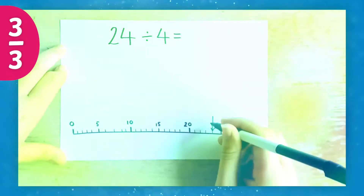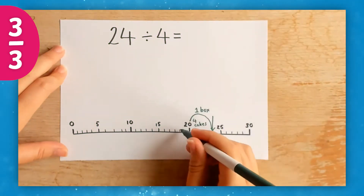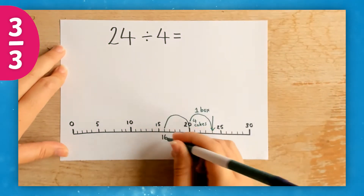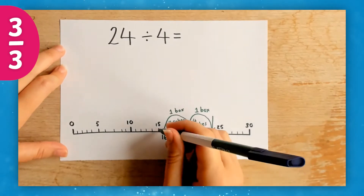In the third and final lesson, we learn to represent division with repeated subtraction. 24 subtract 4 equals 20 — that is one box of four cakes.